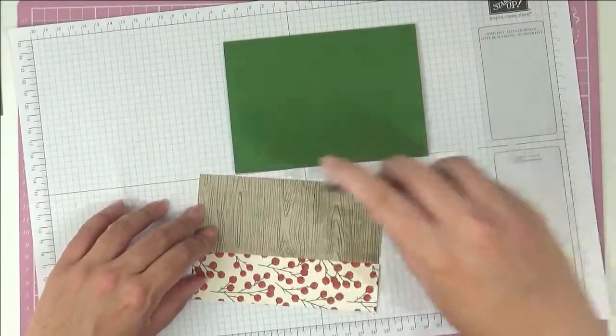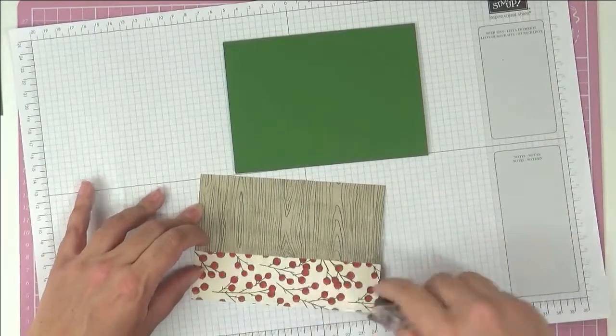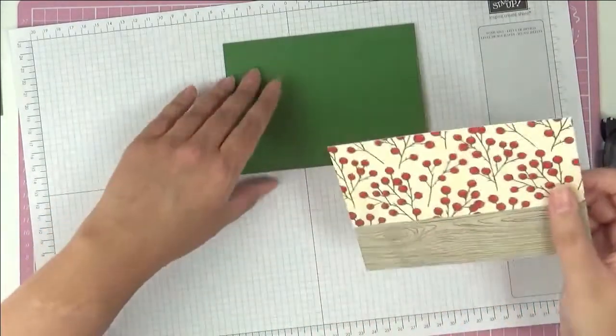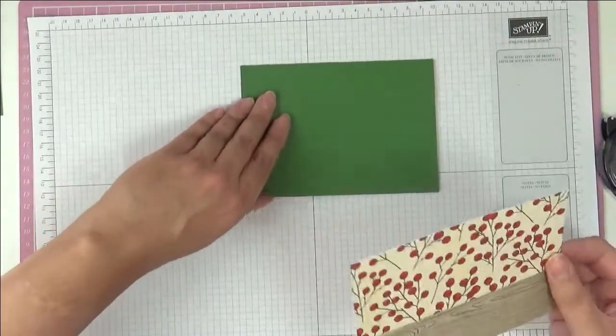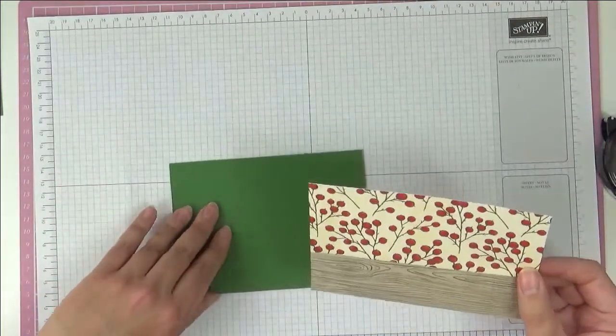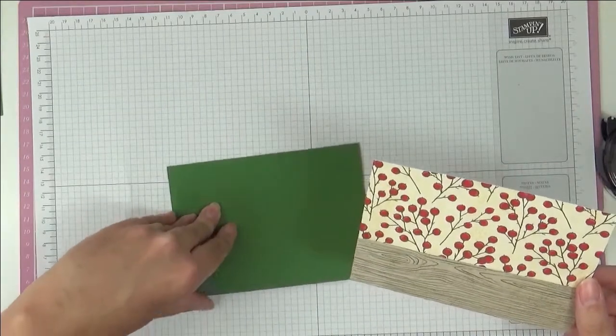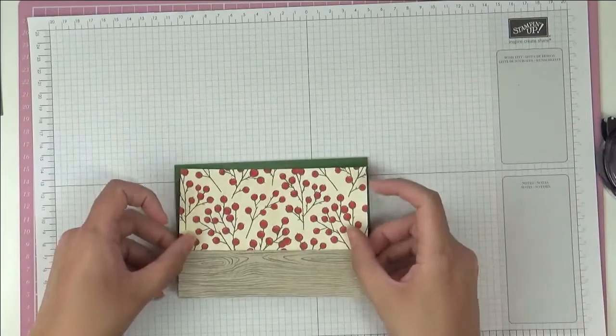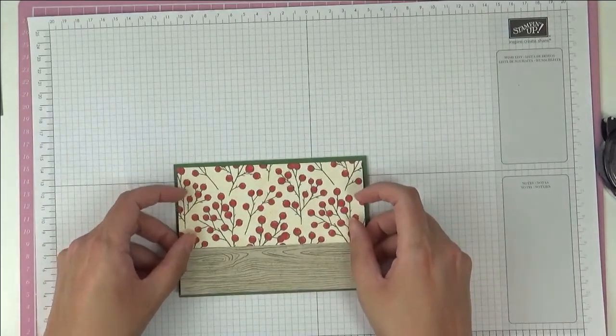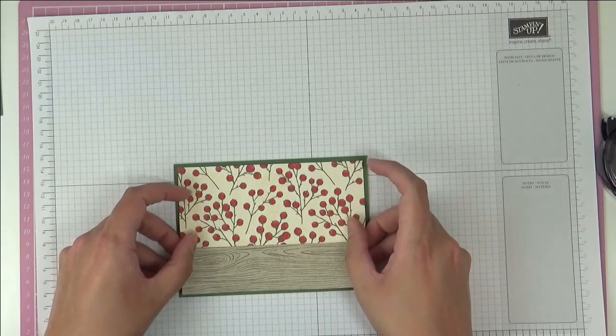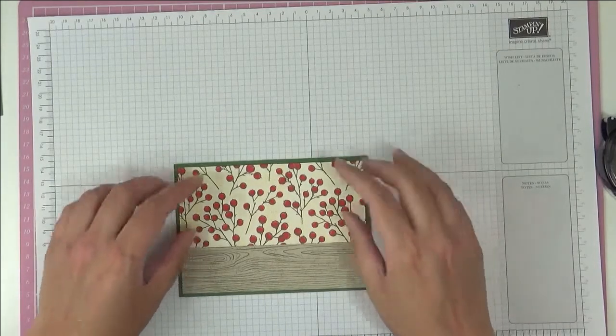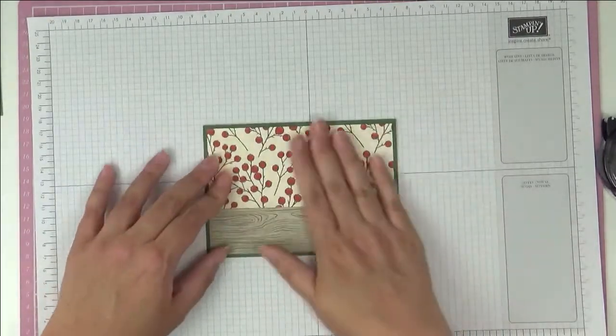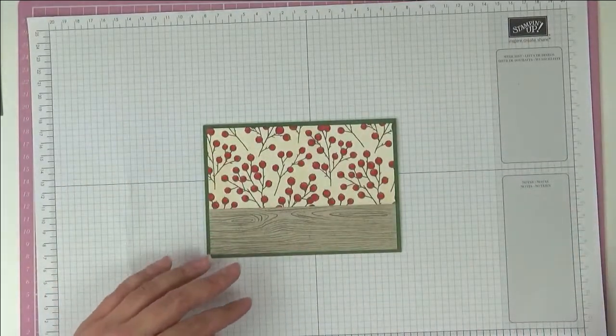And now I'm going to put a good amount of adhesive down, and we're just going to stick this onto our card base. This is Garden Green, and this is an A6 card base. So that's an A4 sheet cut in half and then folded in half. We're just going to stick our amalgamated piece in the center here, just like that.